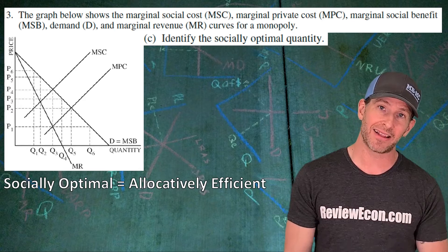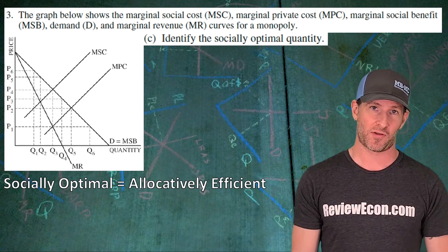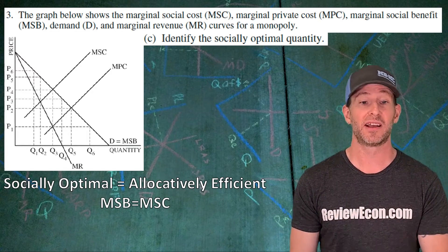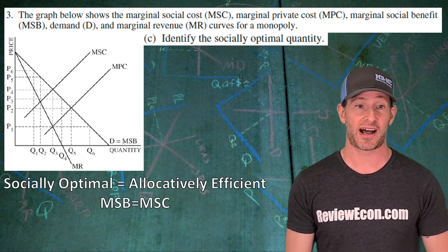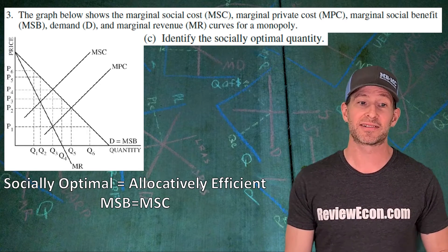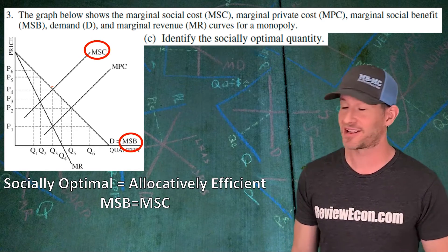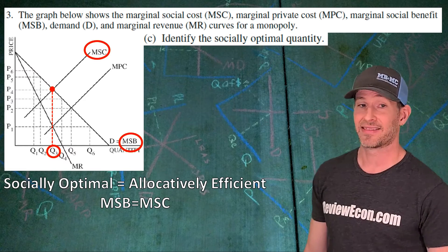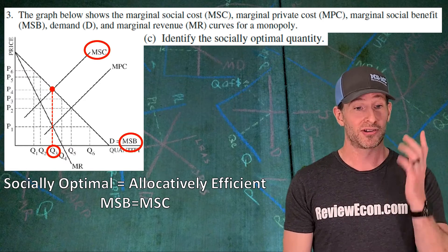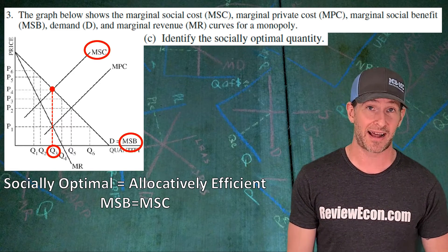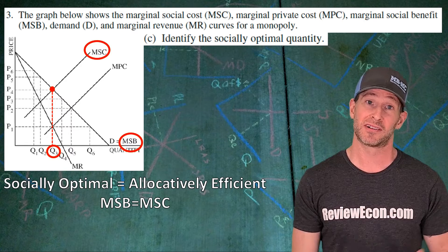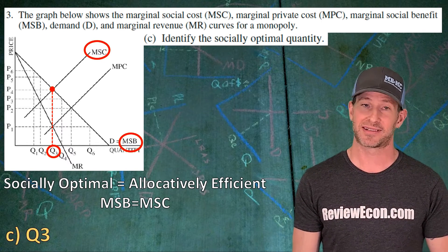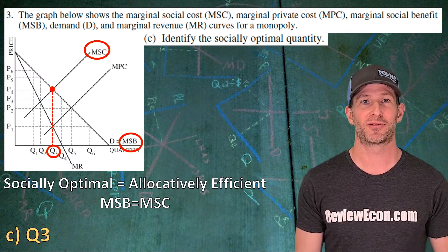For the next part we identify the socially optimal quantity. Socially optimal quantities are the allocatively efficient quantities, meaning marginal social benefit equals marginal social cost. Find those two curves and their intersection, drop down, and that gives us the allocatively efficient, socially optimal quantity. Just identify it and you've got your point.